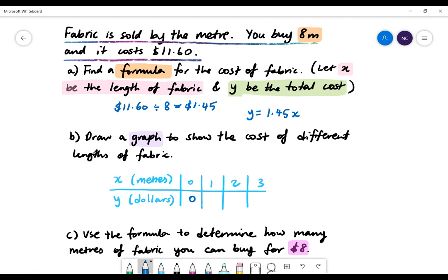When X equals 1, Y equals 1.45. When X equals 2, Y equals 2.90. And when X equals 3, Y equals 4.35.